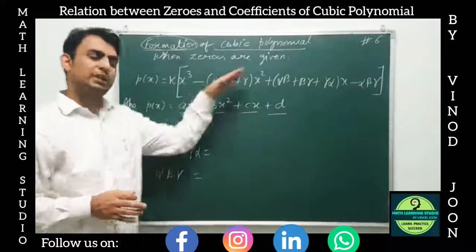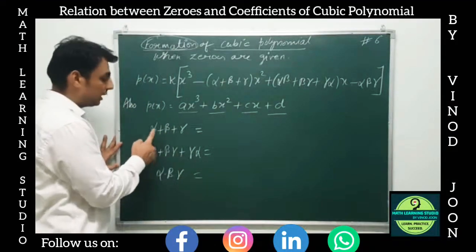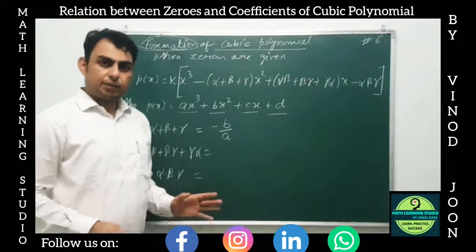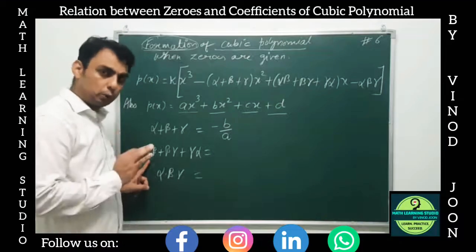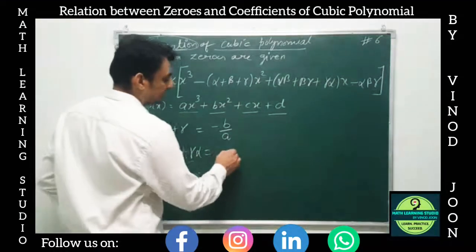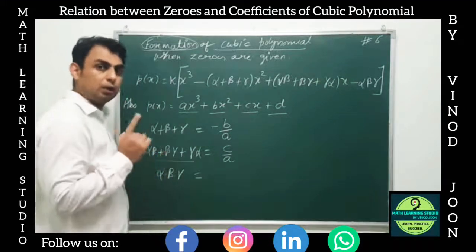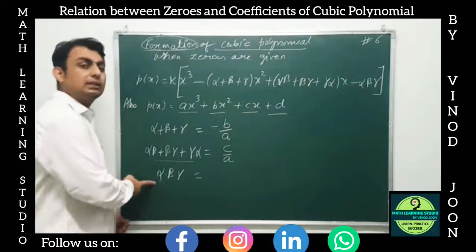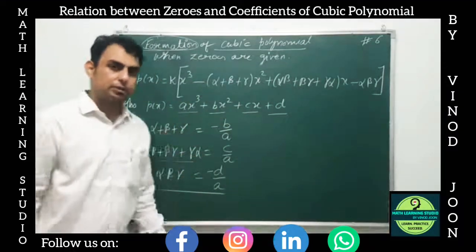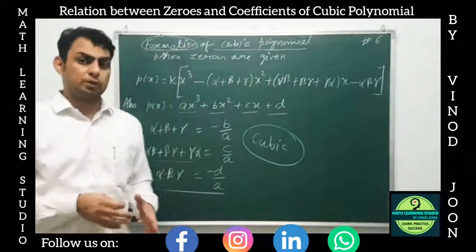Following the same process as for the quadratic polynomial, we multiply k inside and compare coefficients of x³, x², x, and the constant term. The sum of zeros — alpha plus beta plus gamma — equals minus b by a. The sum of the product of zeros taken two at a time — alpha·beta + beta·gamma + gamma·alpha — equals c by a. And the product of zeros — alpha·beta·gamma — equals minus d by a. This is the relationship between the zeros and the coefficients of a cubic polynomial.